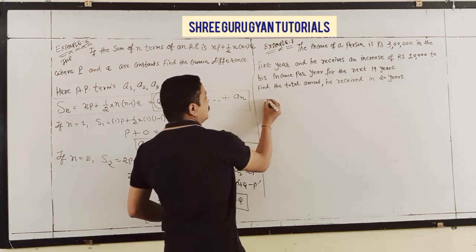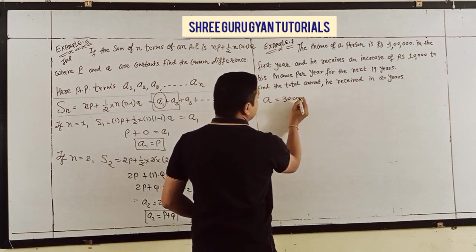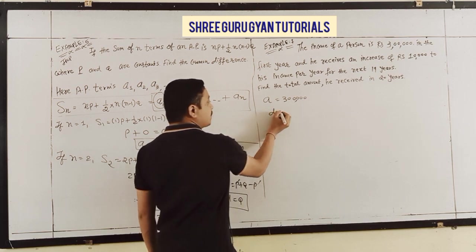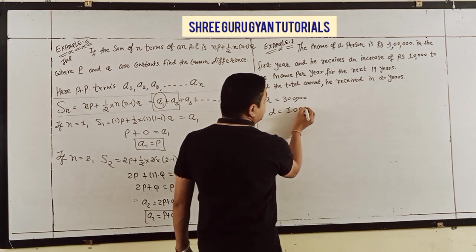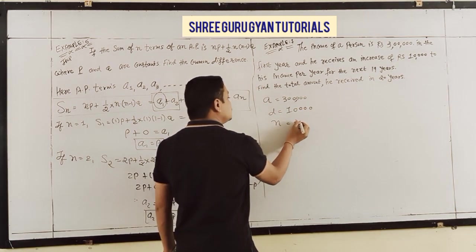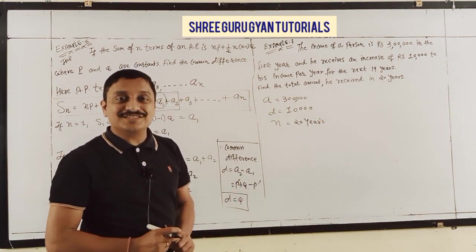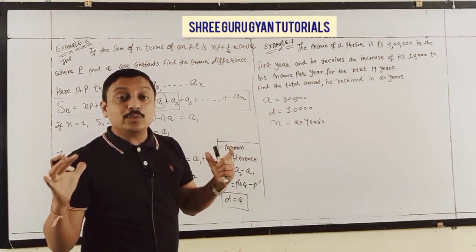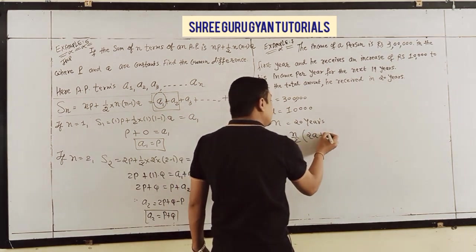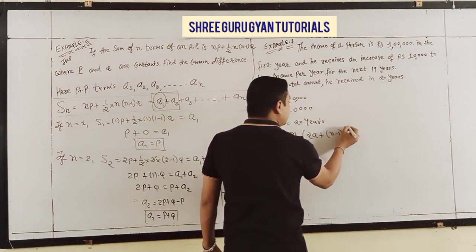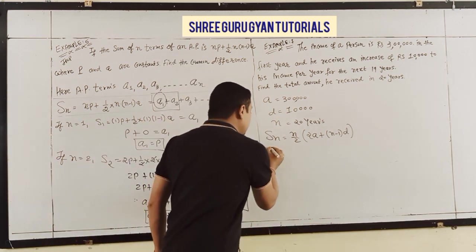Very easy. First year income A = 3,00,000. Common difference D = 10,000. N = 20 years. We want S20 = N/2 × (2A + (N-1)D).